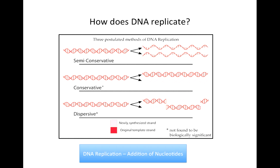In the dispersive model, each new double-stranded molecule is made up of parts of the parent double-stranded DNA and parts of the daughter double-stranded DNA. We know that DNA replicates in the way described in the semi-conservative model rather than the conservative or dispersive models.